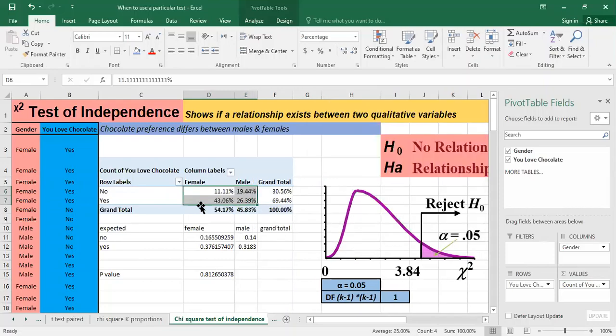As you can see, the females the percentage is much higher that they love chocolate, it's much higher than the percentage of males that they love chocolate and this is the percentage from the grand total. So like this we can see the relationship that exists is that females they have a tendency to love more chocolate.